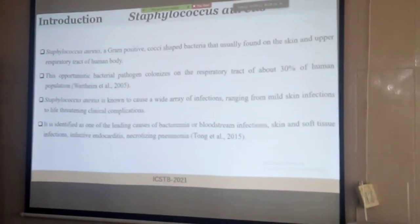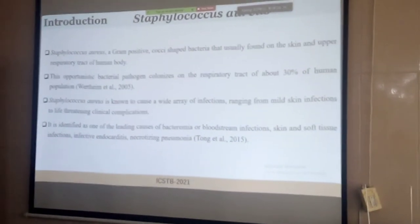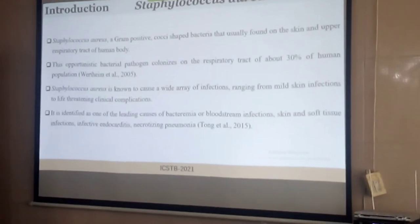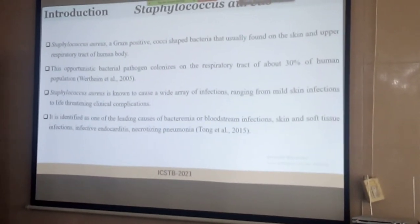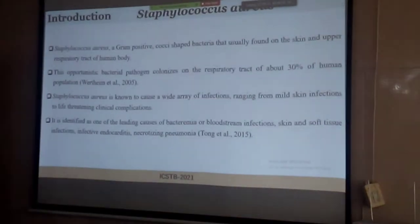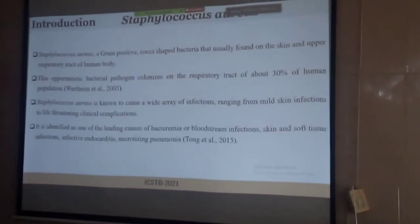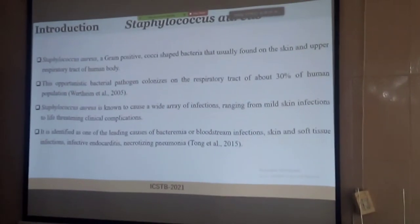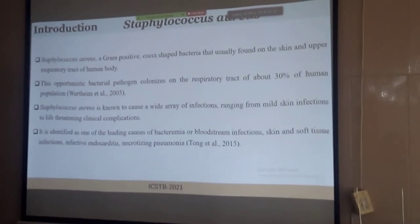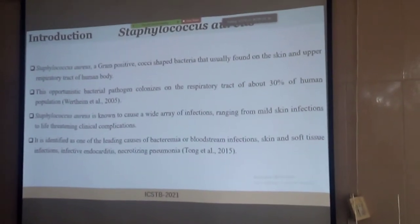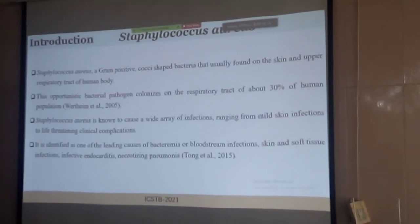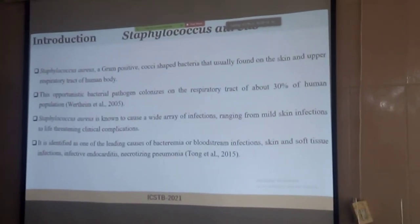We all know about Staphylococcus aureus. It is a gram-positive opportunistic pathogen. Usually, it is a normal inhabitant of our skin and upper respiratory tract, and it will be found in the respiratory tract of about 30% of the human population. Employing a wide range of virulence factors, it can produce a lot of diseases which can be mild to life-threatening.